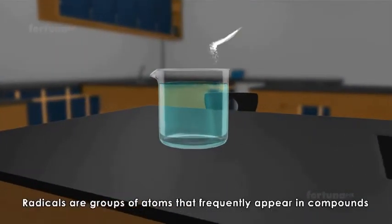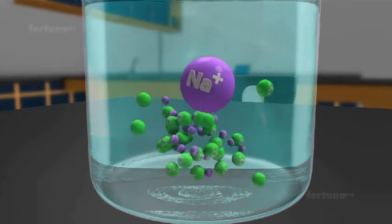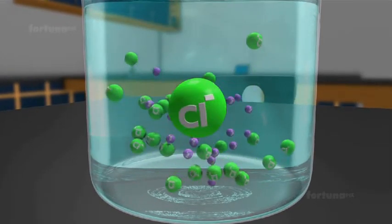Radicals are groups of atoms that frequently appear in compounds. They have a valence associated with the particular radical.